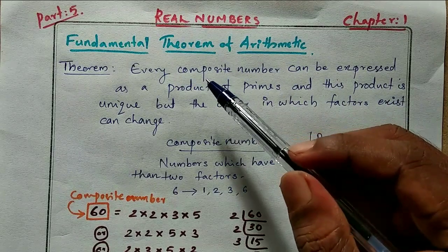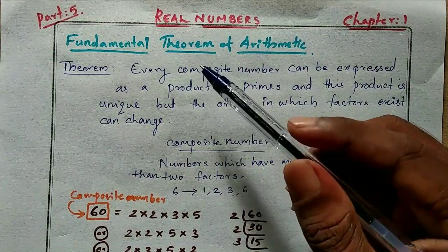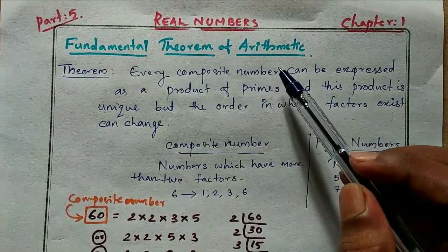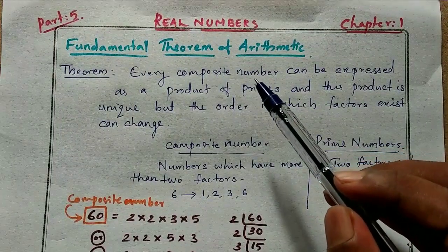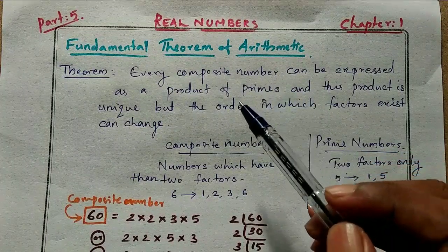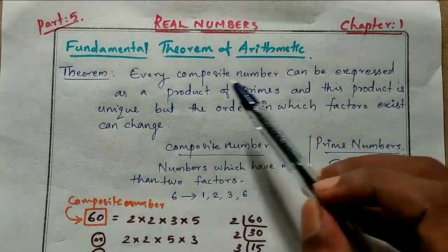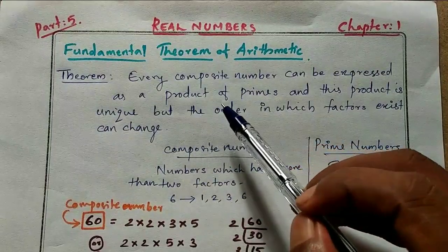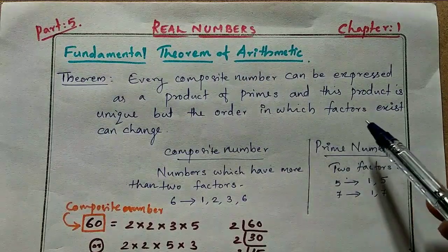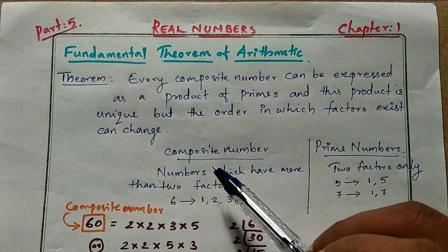Welcome students. Last day we discussed Euclid's Division Lemma and its problems. Now let us start a new topic: the Fundamental Theorem of Arithmetic. It's a very important topic and you can expect at least one question in your public examination. The statement of the theorem: every composite number can be expressed as a product of primes, and this product is unique, but the order in which factors exist can change.